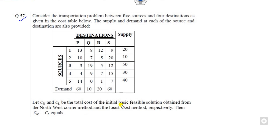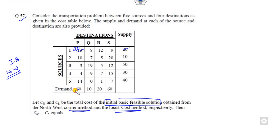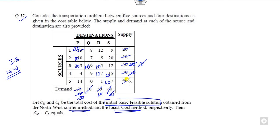Now look at question 57. Here we have to find the initial basic feasible solution using the North-West corner method and the least cost method. For the North-West corner method: starting from the top-left cell, the allocations are 20, 40, 10, 30, 30, 20, 10, 10, 10, 20, 20, 40 — following the standard North-West corner procedure until all supply and demand are exhausted.